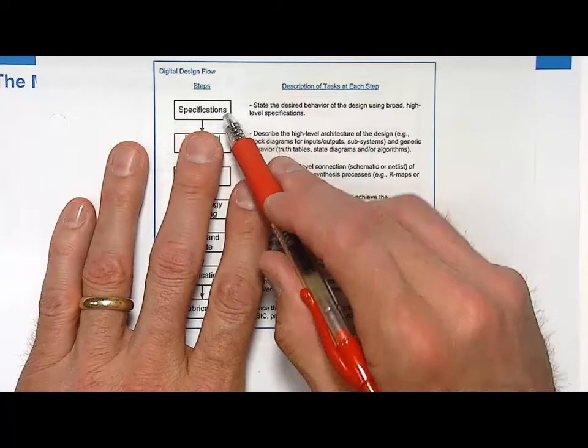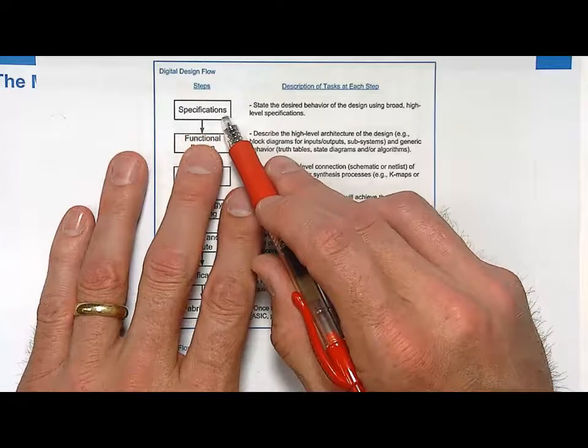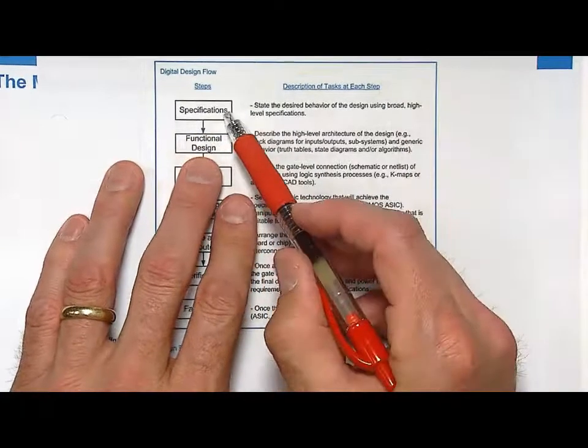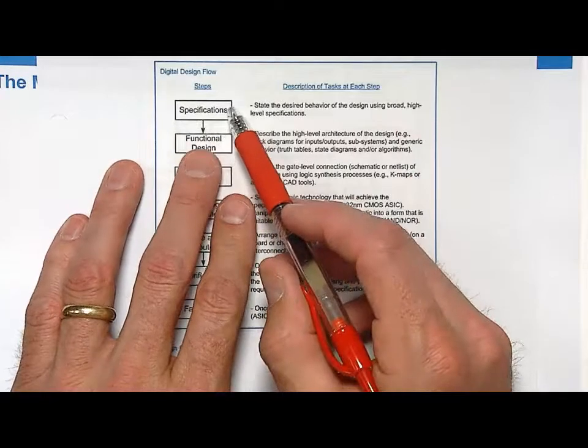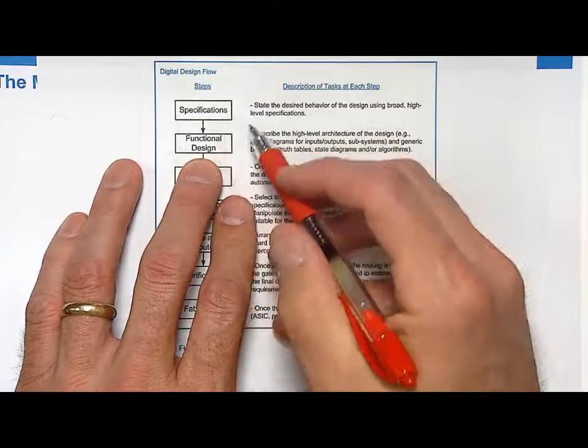We're designing at the logic level, but this is going to be what is it going to do and how much power does it consume. Then you move from the specifications, and these are just words. These are something that would come out in a document like a control document or a theory of operation.